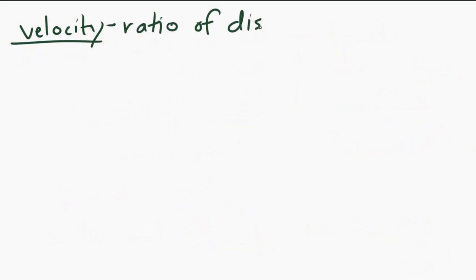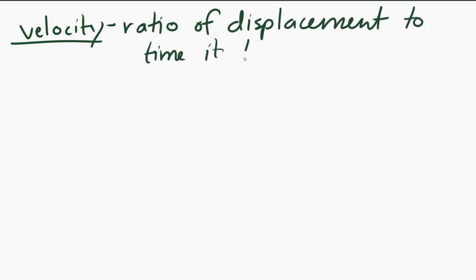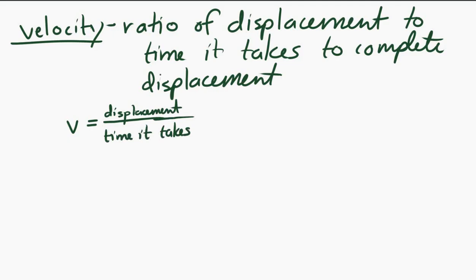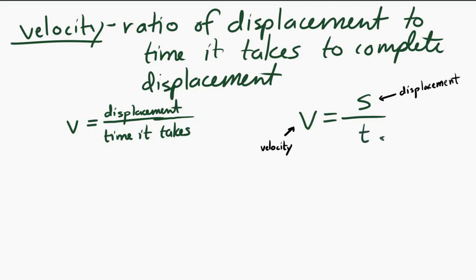Velocity is different. Velocity is the ratio of the displacement to the time that it takes to complete that displacement. We can use that expression to come up with an equation: velocity is equal to the displacement of an object divided by the time it takes to complete that displacement. Velocity is often given the symbol v, displacement is often given the variable s — and if that seems weird, it is, but that's what we'll do. So v equals s over t, and that's our basic velocity equation.